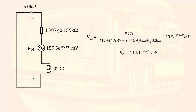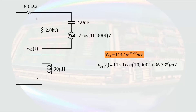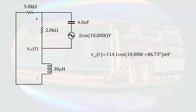This results in a phasor voltage with a magnitude of 114.1 millivolts and a phase angle of 86.73 degrees. Taking that phasor voltage back to the time domain, the contribution of the 2 volt, 10 kiloradian per second voltage source is an output voltage with a magnitude of 114.1 millivolts, an angular frequency of 10 kiloradians per second, and a phase angle of 86.73 degrees.